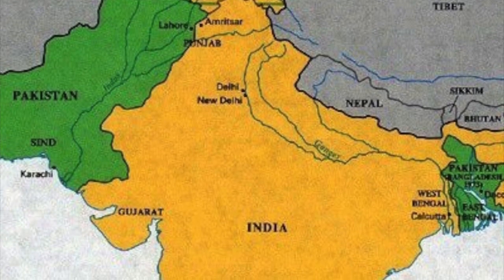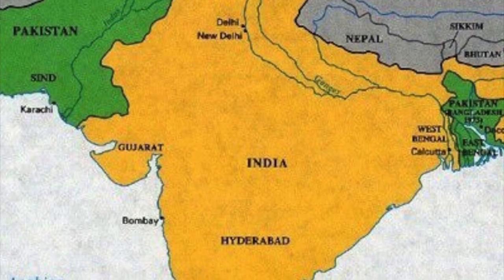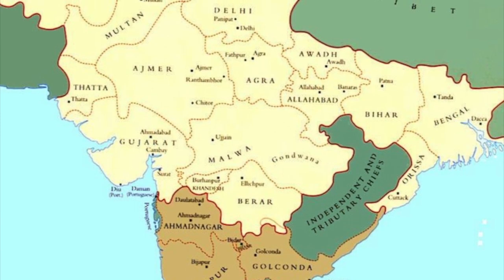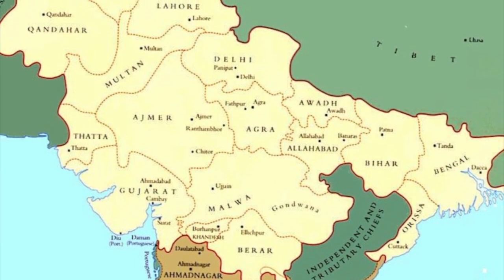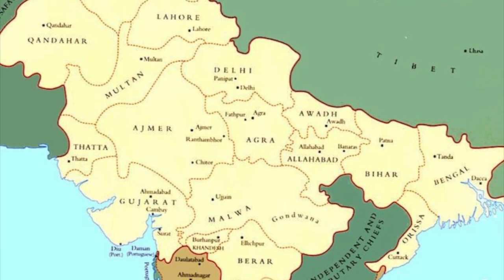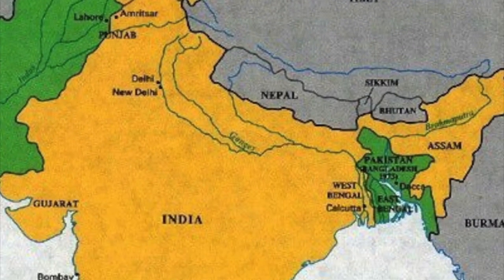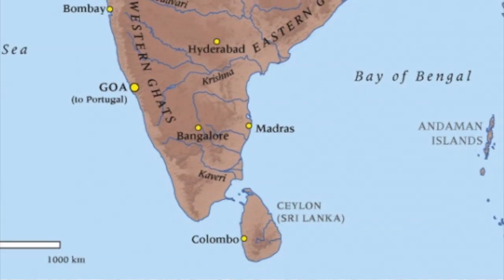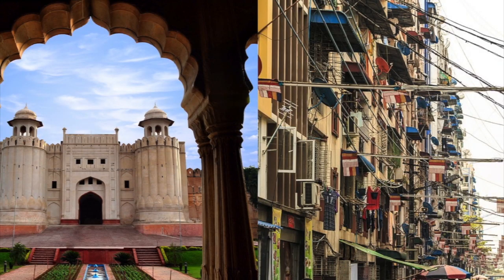India may be one big united country now, but this hasn't always been the case. Before British colonialism, India was made up of numerous different entities, with everything from massive empires to tiny city-states. This can kind of still be seen even today, with the fact that Pakistan, Bangladesh, Myanmar, and Sri Lanka, despite also having been part of British India, are nonetheless not part of modern India, and we all know how different those countries are from each other.